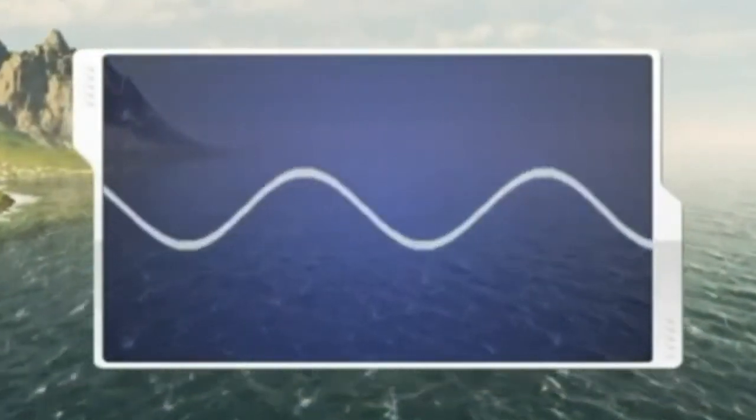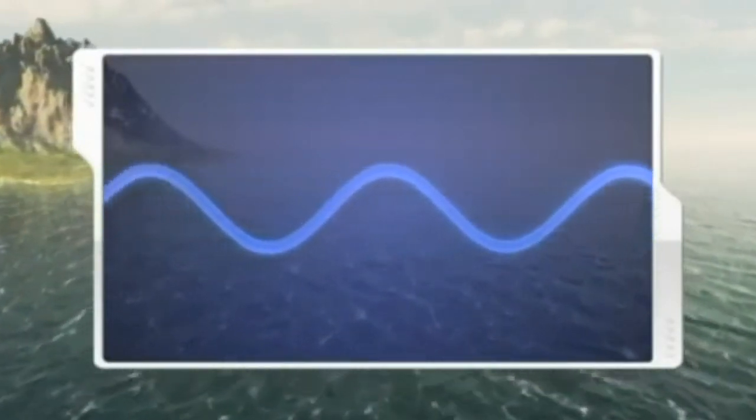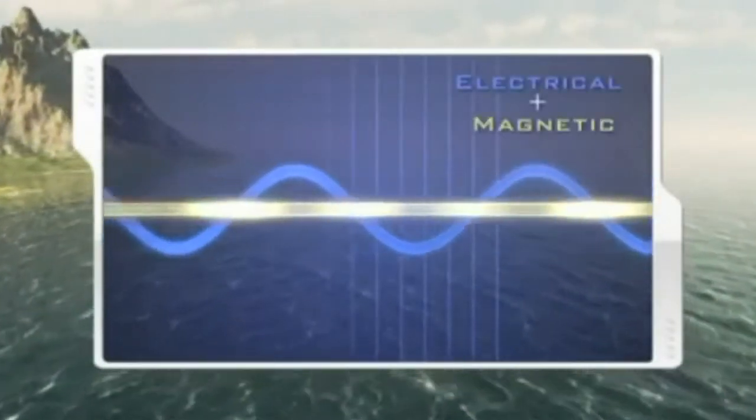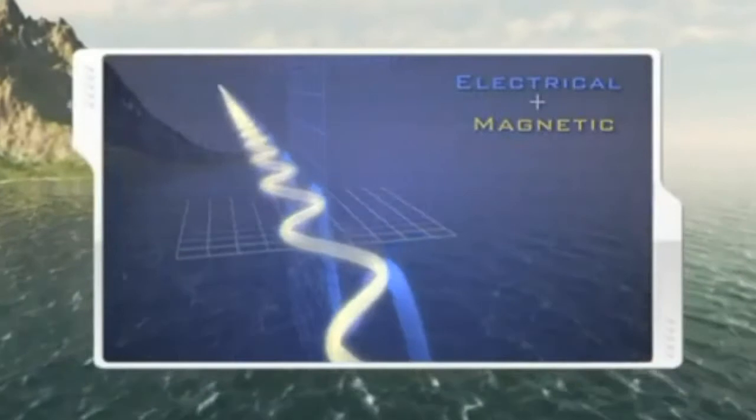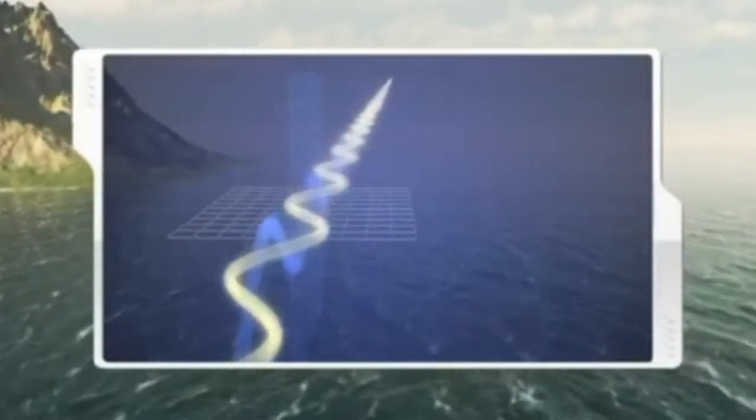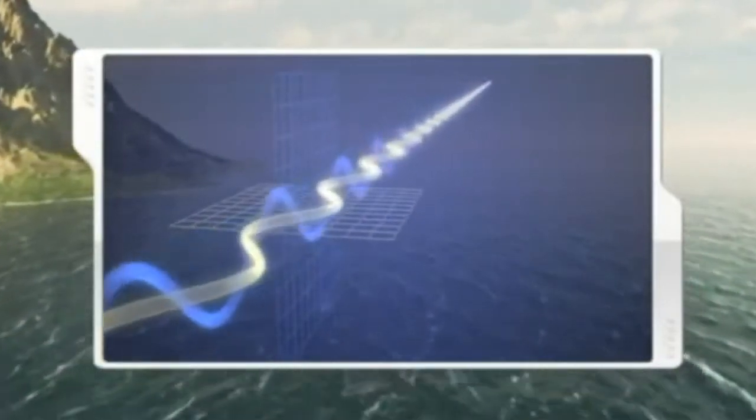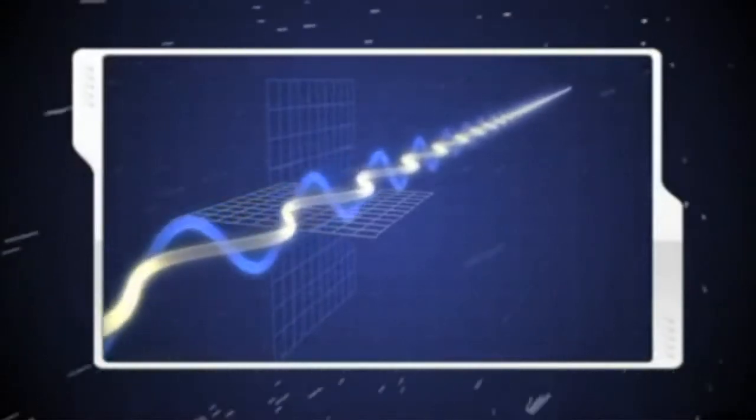EM waves are produced by the vibration of charged particles and have electrical and magnetic properties. But unlike ocean waves that require water, EM waves travel through the vacuum of space at the constant speed of light.